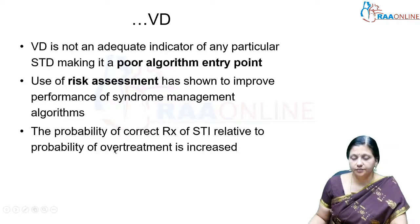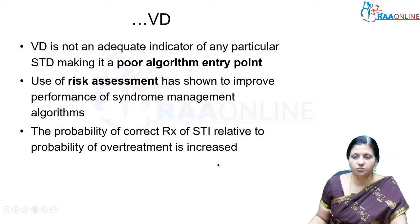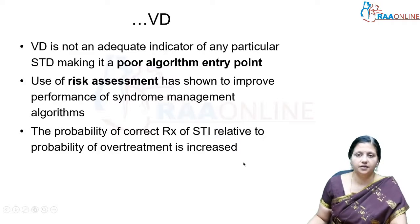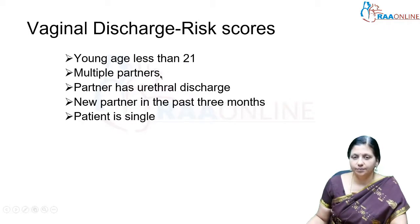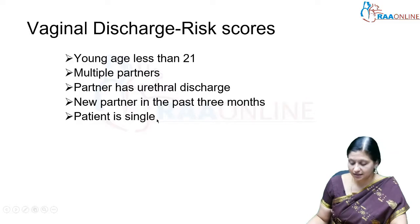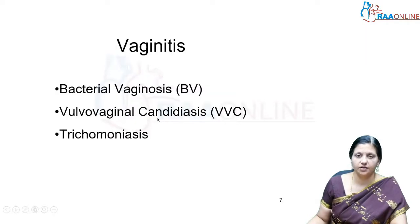We should not rely on syndromic management in all cases of vaginal discharge — it is more important to do the correct treatment than syndromic treatment. Risk factors for vaginal discharge include: age less than 21, multiple partners, a male partner with urethral discharge, a new partner in the past 3 months, and a single patient with high-risk behavior.